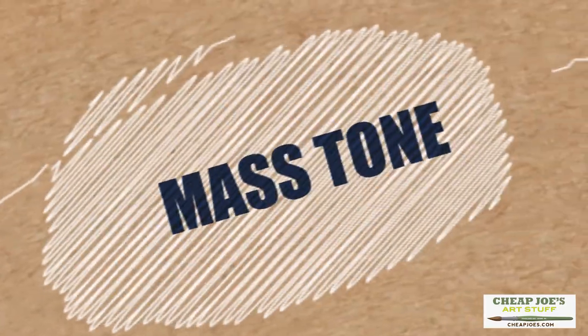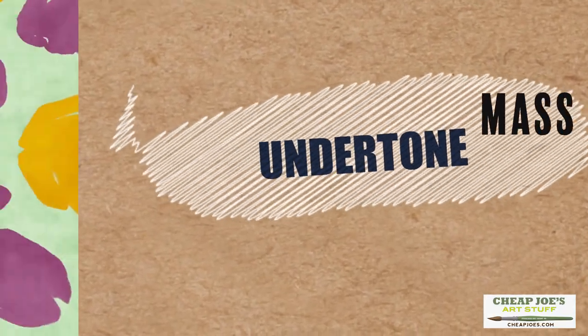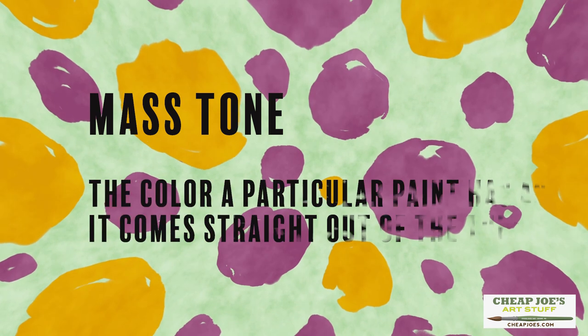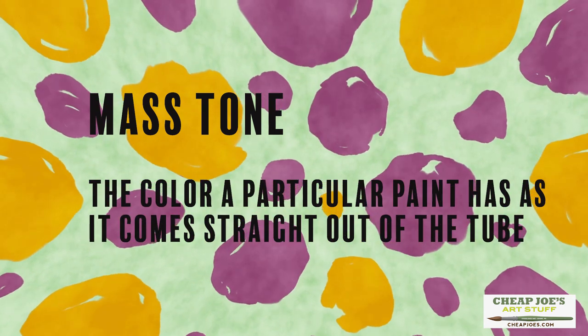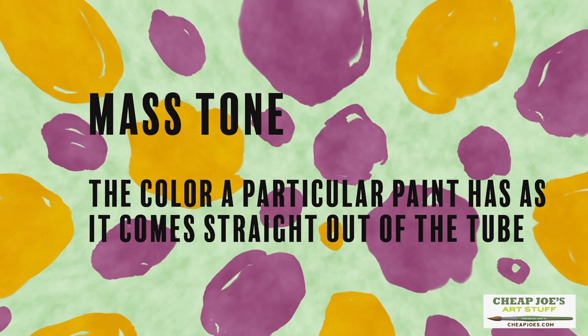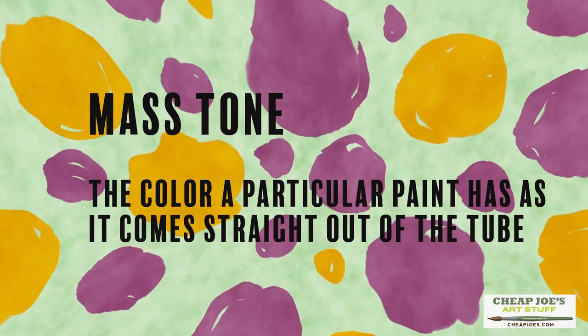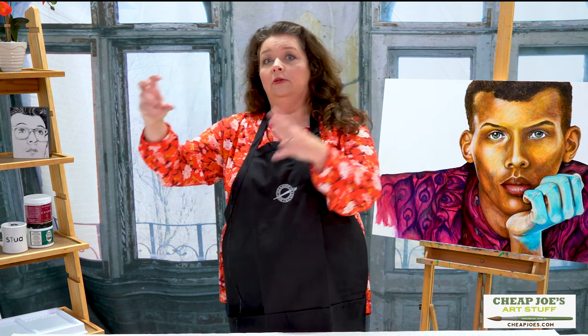You may or may not have heard the terms mass tone and undertone. Mass tone has to do with the color that a particular paint has as it comes straight out of the tube. What does that color look like when you squirt it out of the tube directly onto your palette? If you're painting in an impasto style, mass tone is very important because it's directly proportional to the outcome you want to see on the canvas.